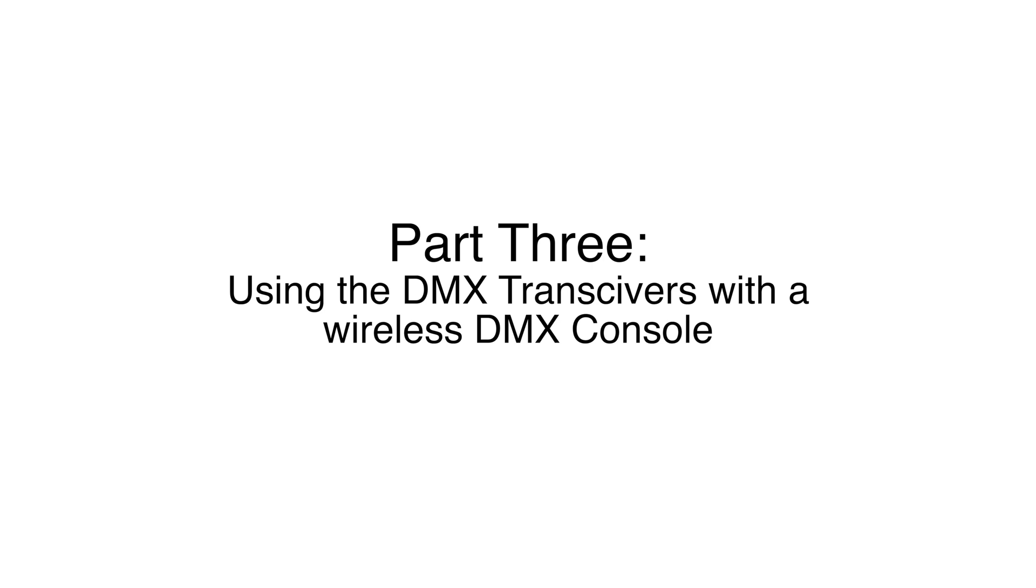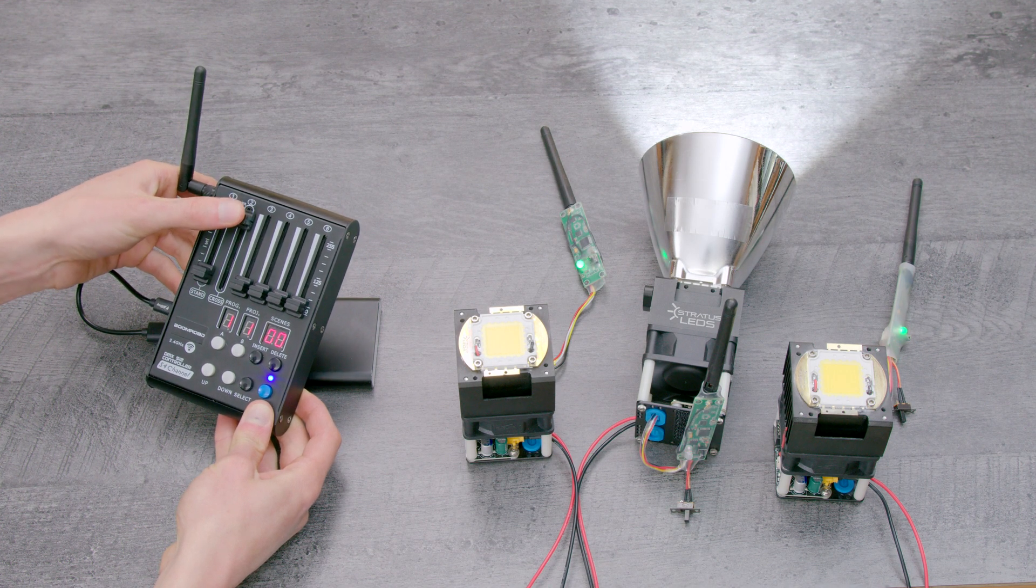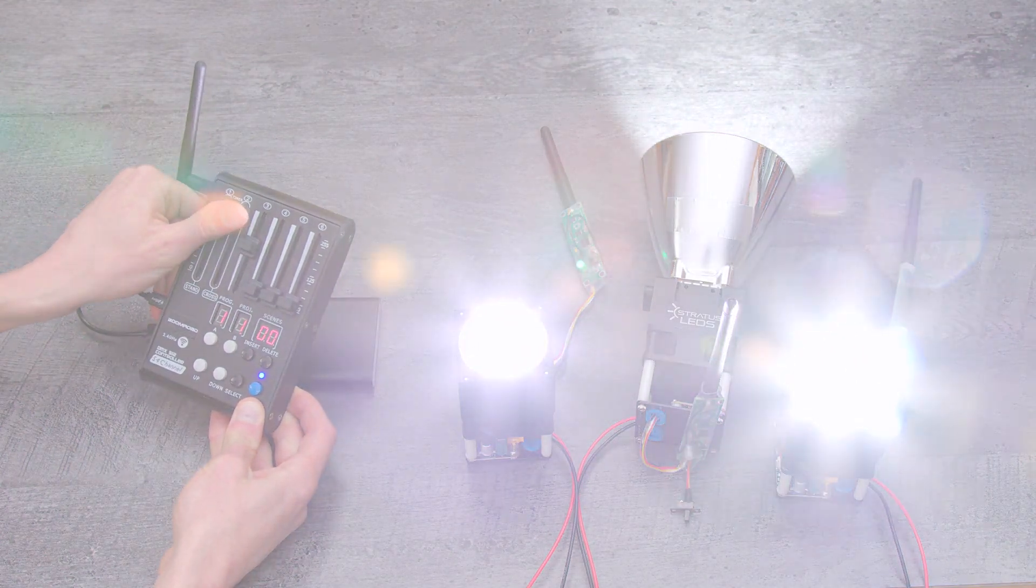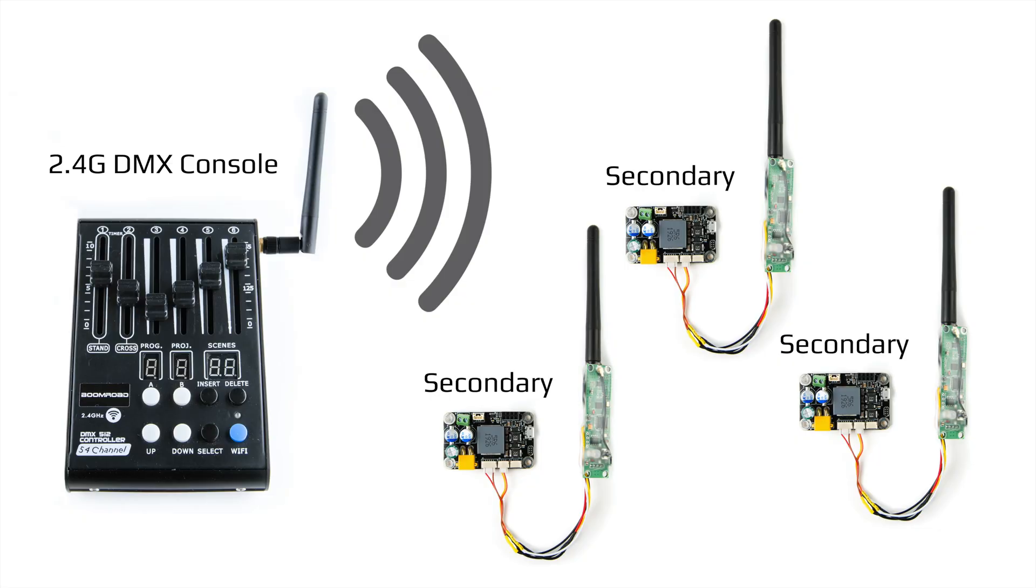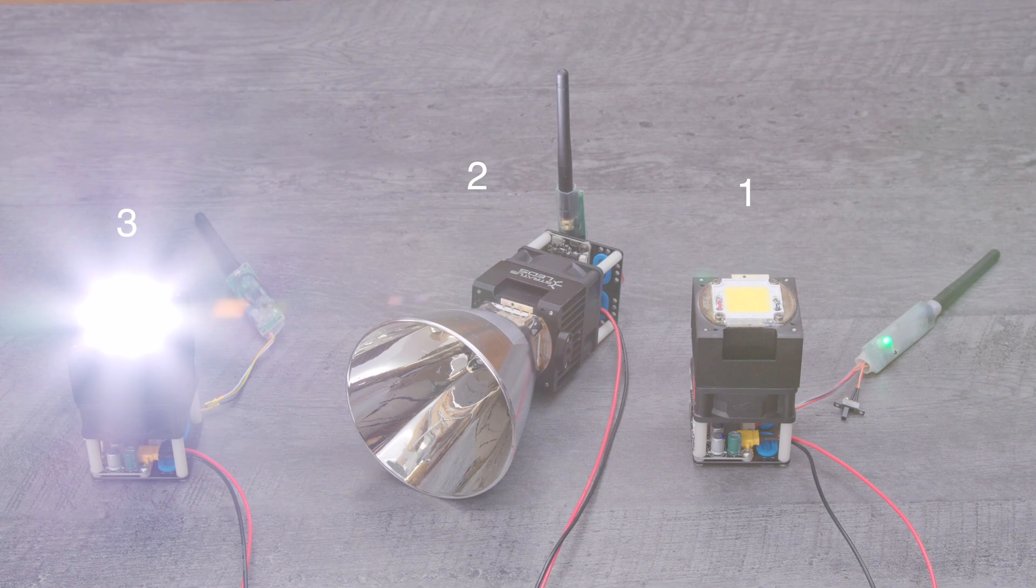These transceivers can also be used with the wireless DMX console. The console can be used to manually control up to 54 DMX channels and create pre-programmed scenes. All the LumiBoosts will need their DMX modes set to secondary. To control each module individually, each LumiBoost will need to be assigned a unique DMX channel.